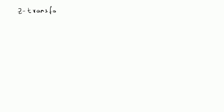Hello, welcome. In this short video, let us look at the Z-transform of a sinusoidal signal. Specifically, we are going to look at X of n is equal to cos of omega naught n times U of n. That is, we are looking at a causal sinusoidal signal. To evaluate the Z-transform, we will use the linearity property.